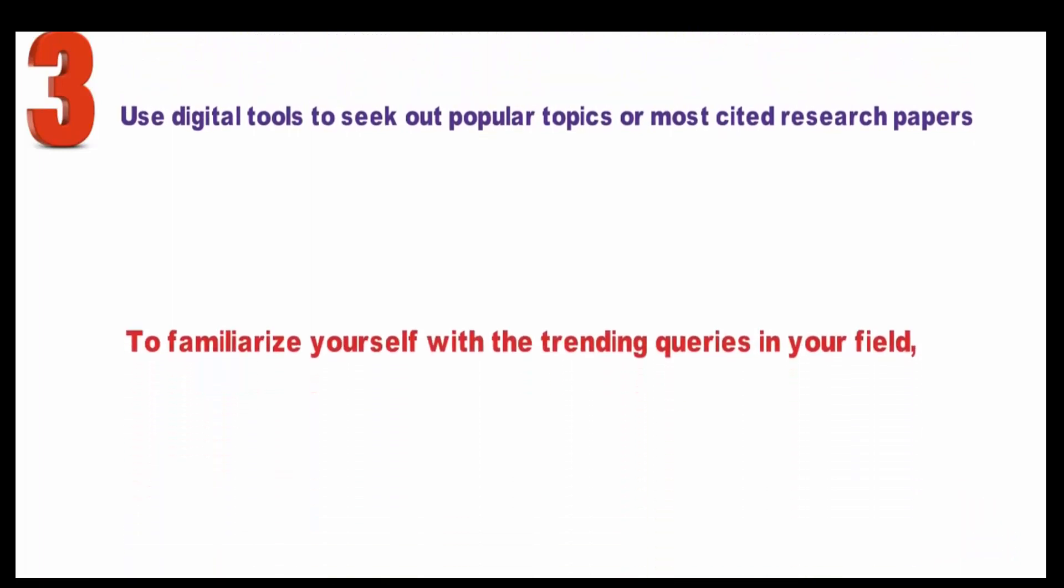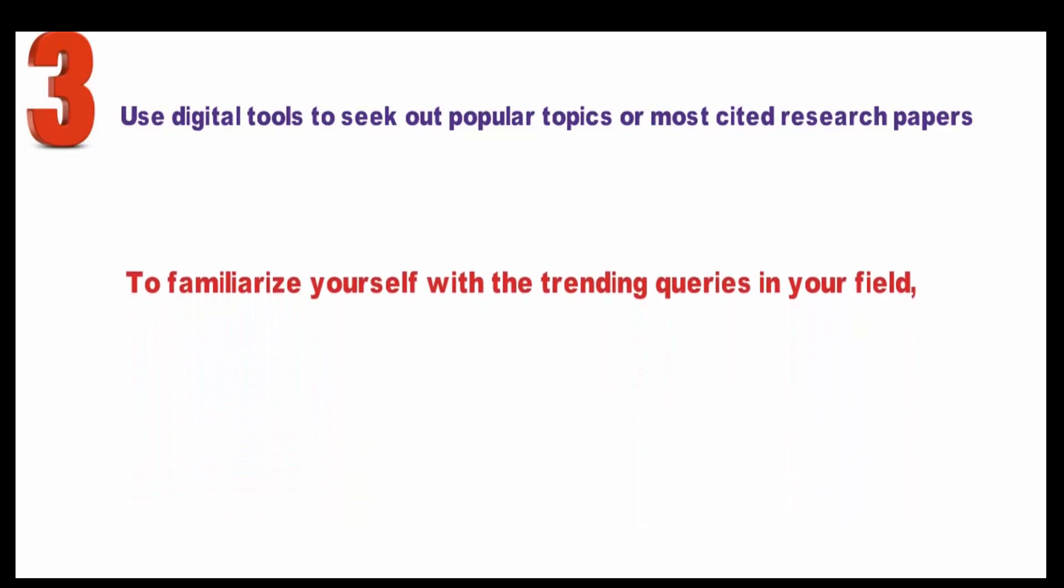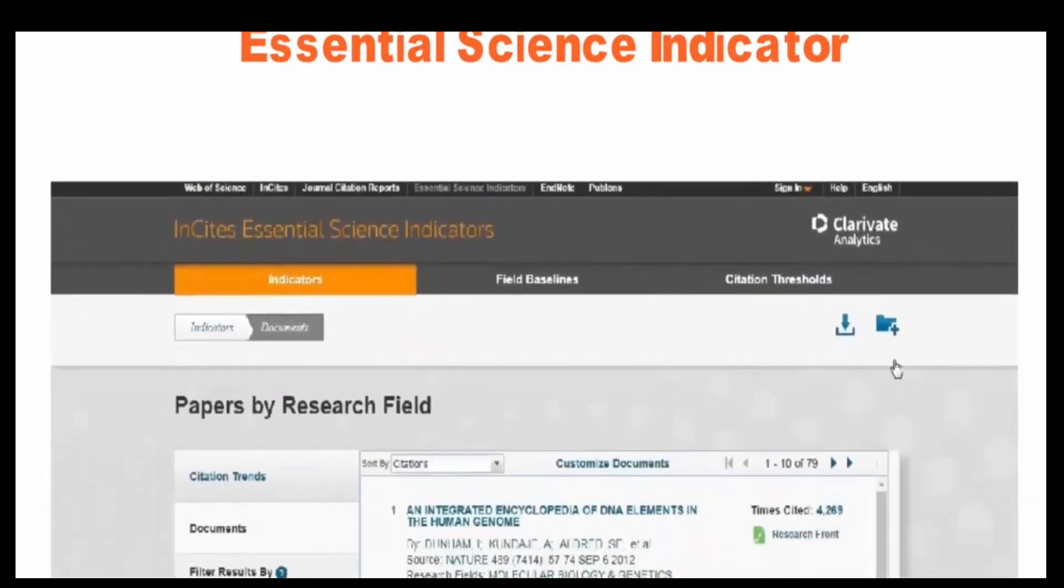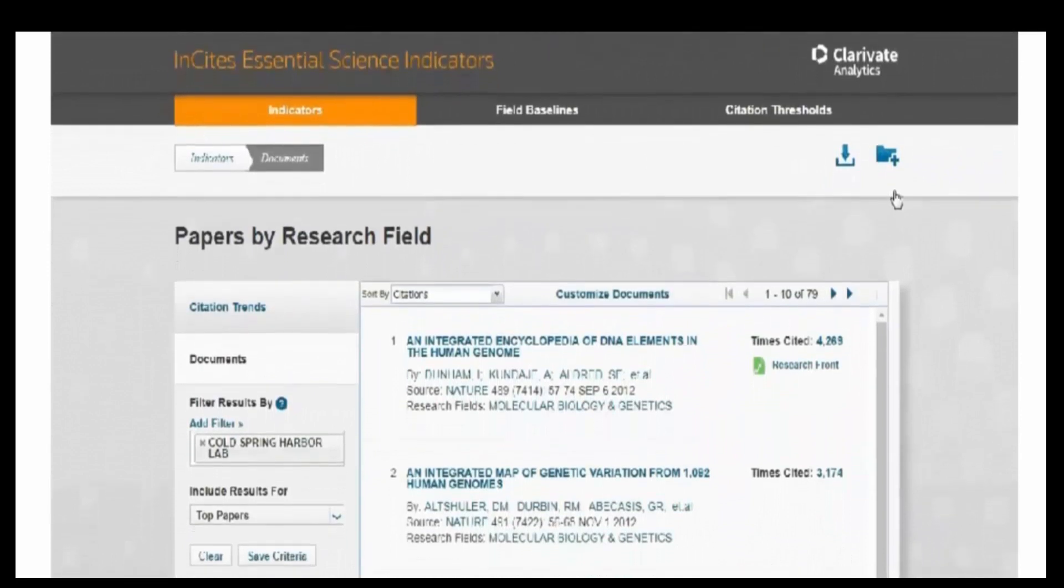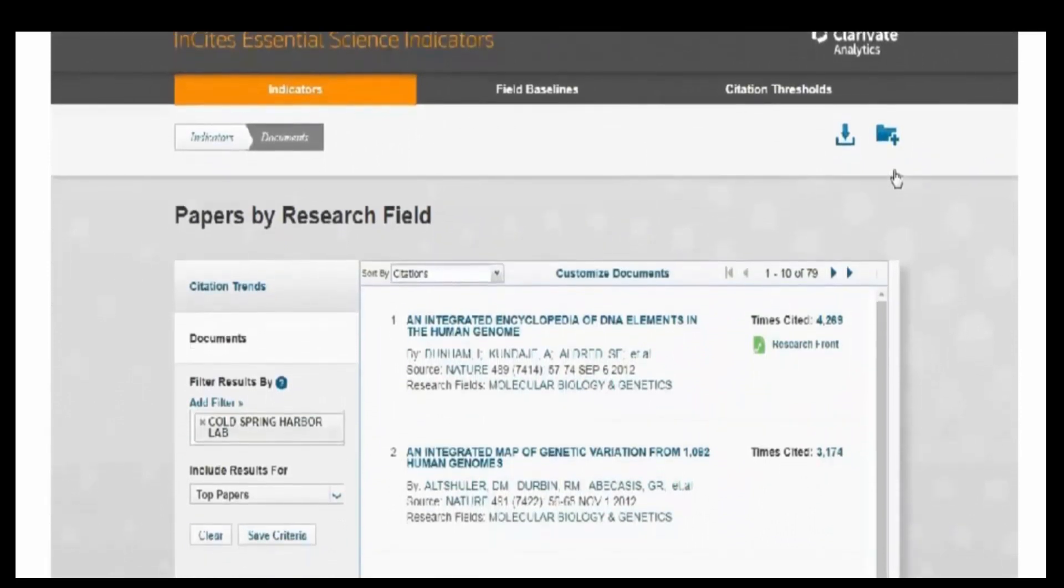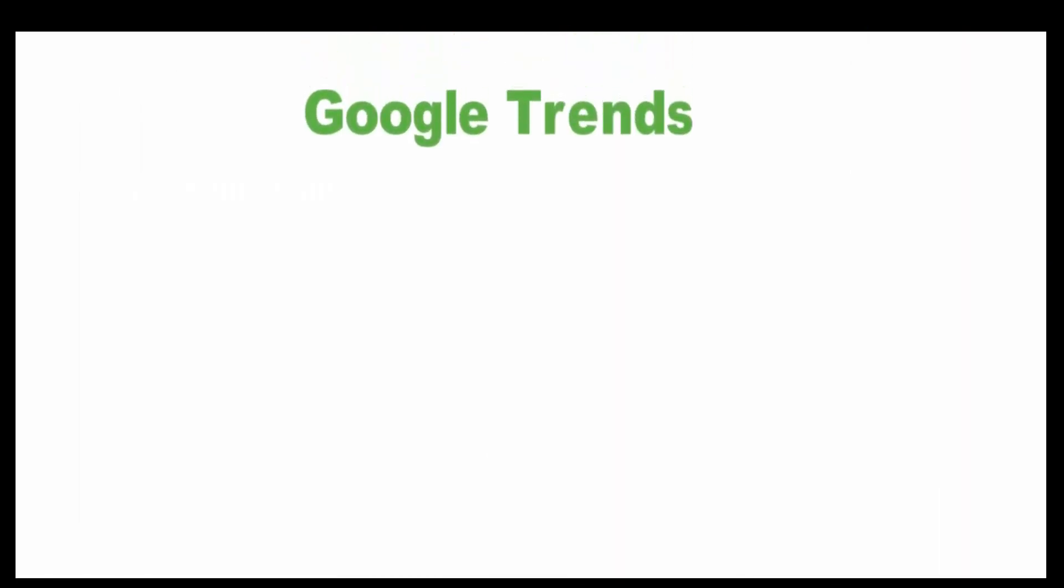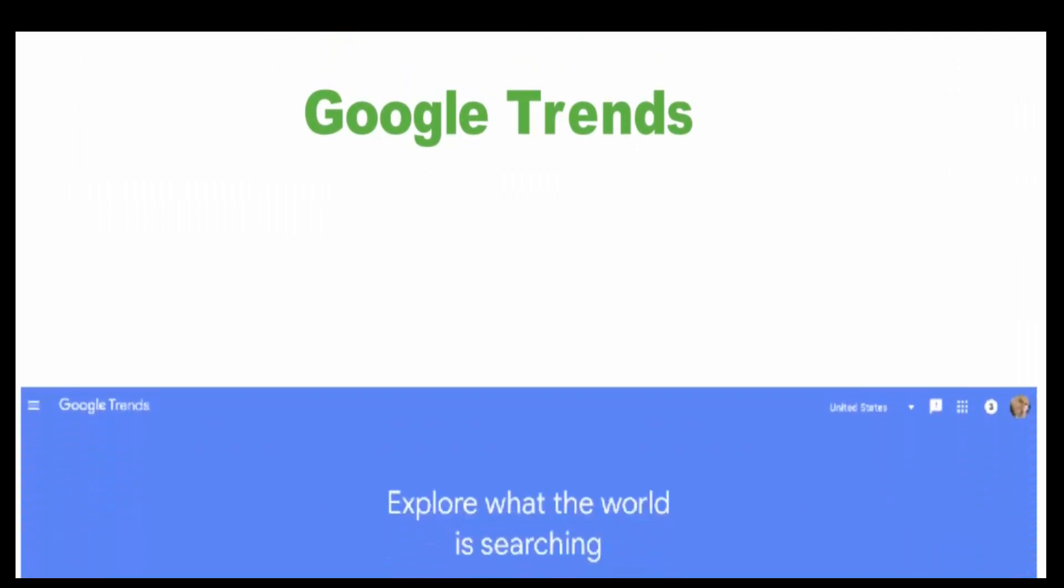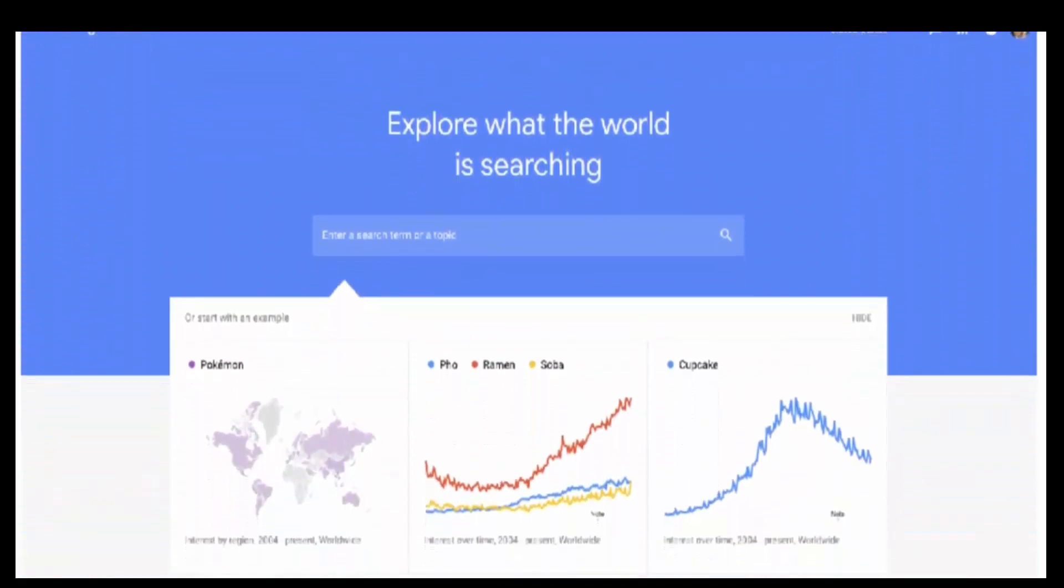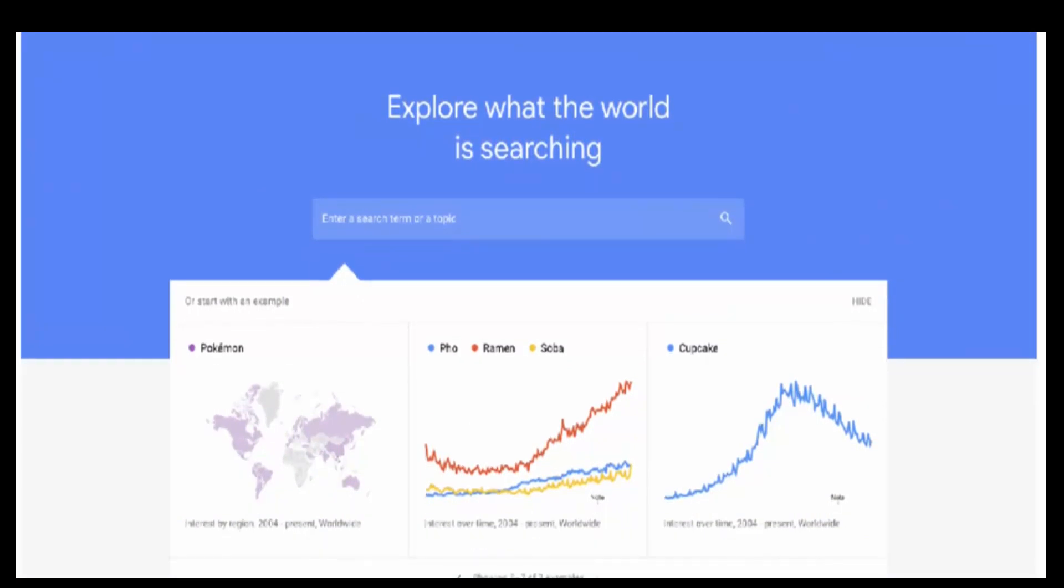Use digital tools to seek out popular topics or most cited research papers. To familiarize yourself with the trending queries in your field, you can use digital tools as they can save time and help you cast a wider net in your search for a research gap. Websites like Essential Science Indicator that identify the most cited papers in a field along with the emerging branches, influential contributors, publications, and countries in that field can be immensely useful to know which topics are considered important. You can also use Google Trends to learn more about the popular questions related to your research area. This will ease your search for an untapped area in your research field.